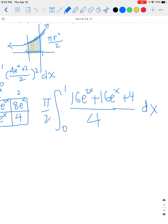Just to make these a little bit simpler, we're going to divide each of these by 4. So we have π/2 times the integral from 0 to 1 of 4e^(2x) + 4e^x + 1 dx.